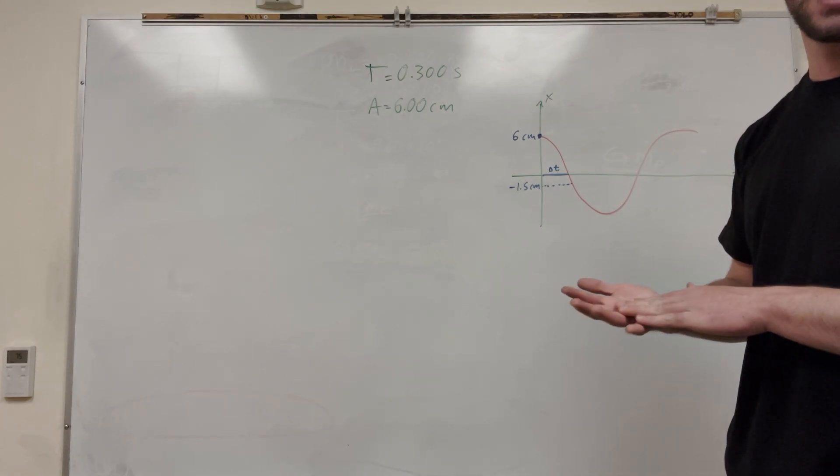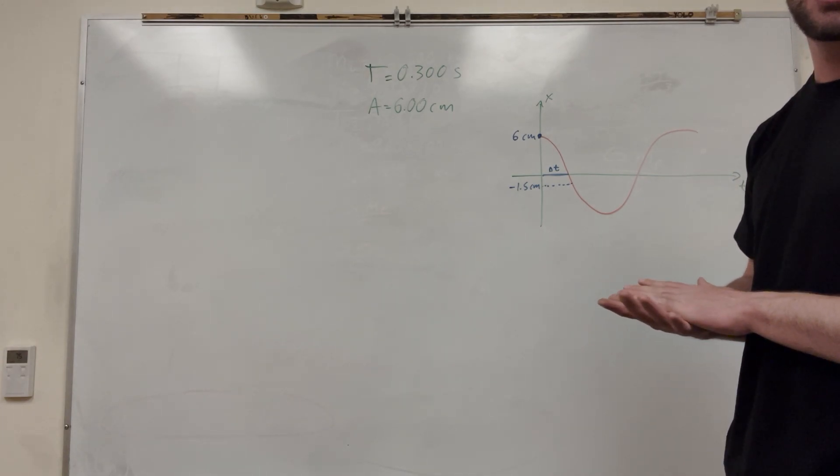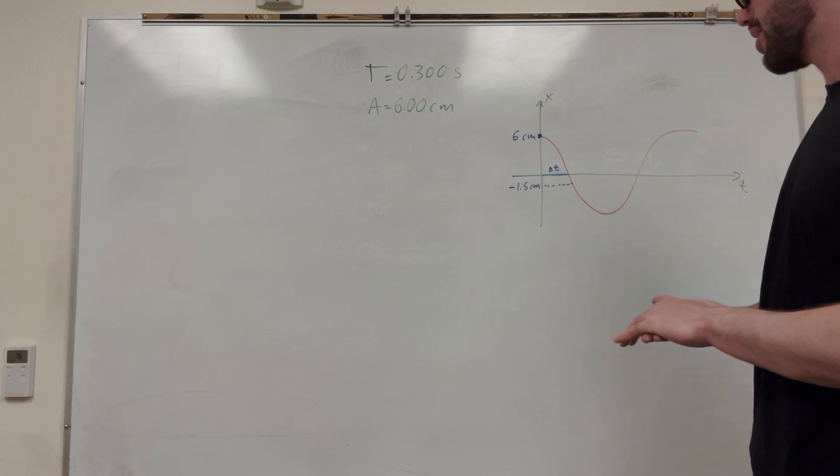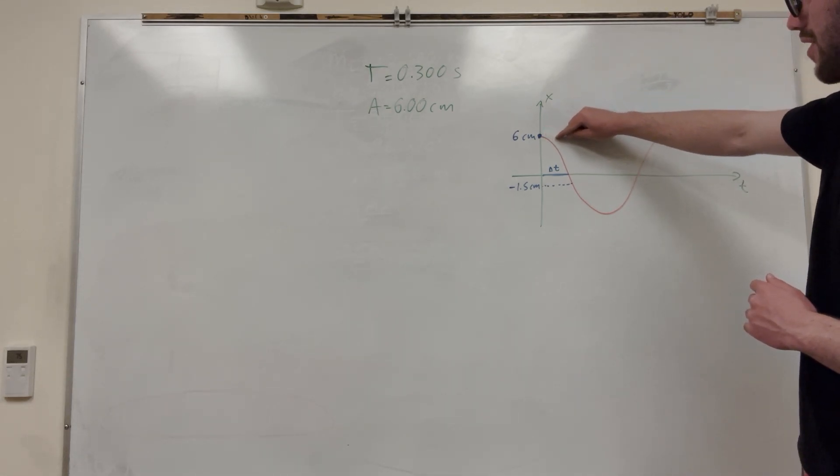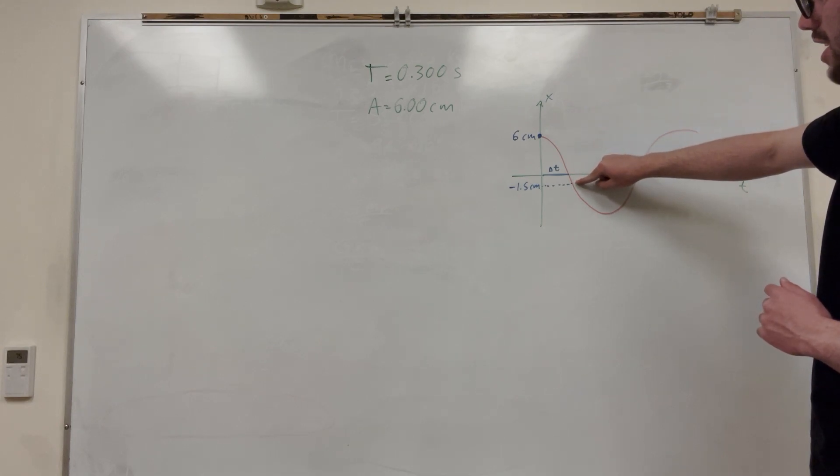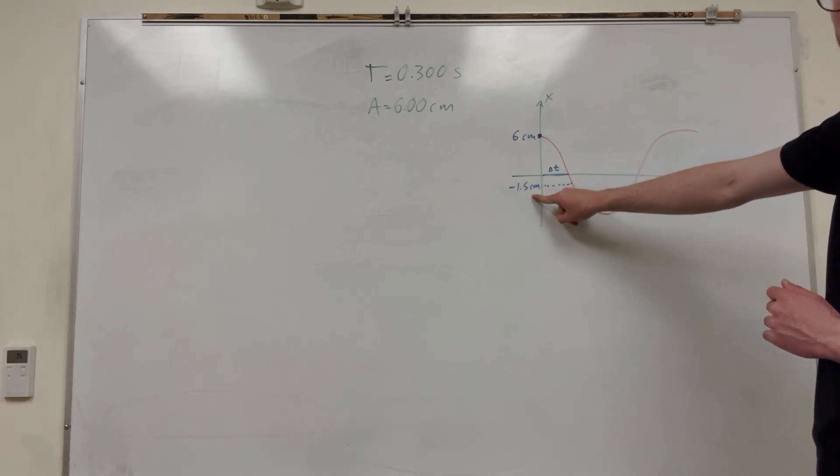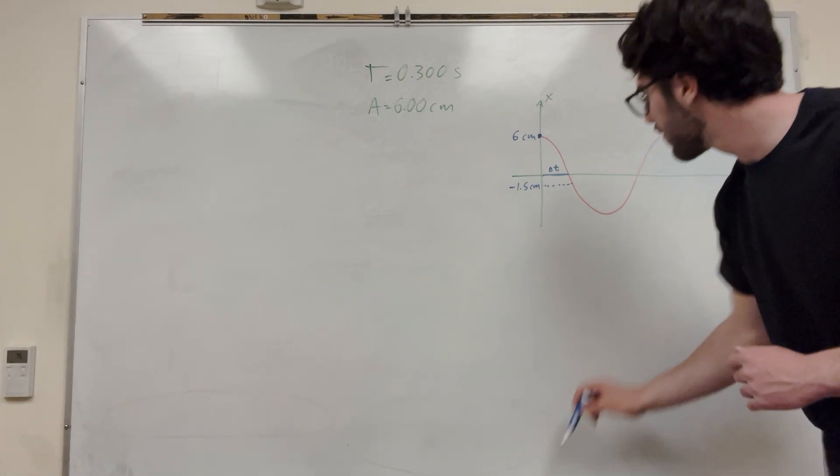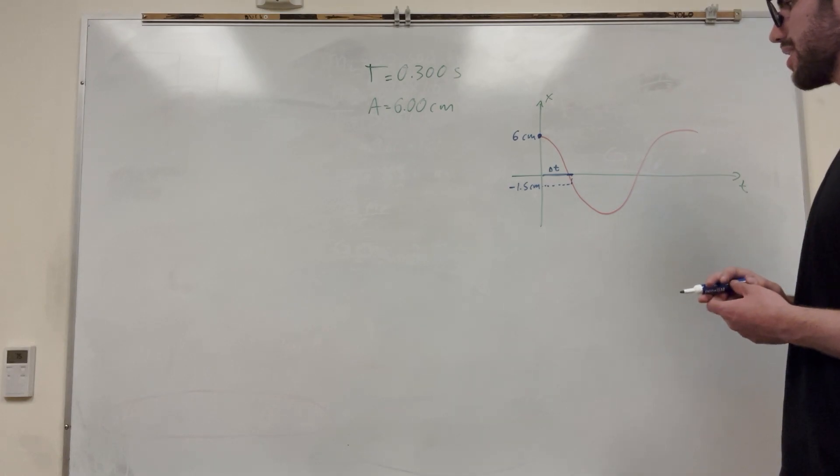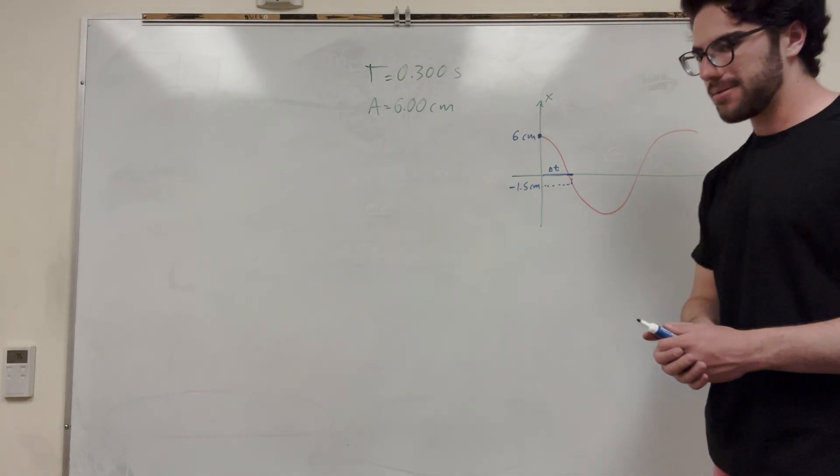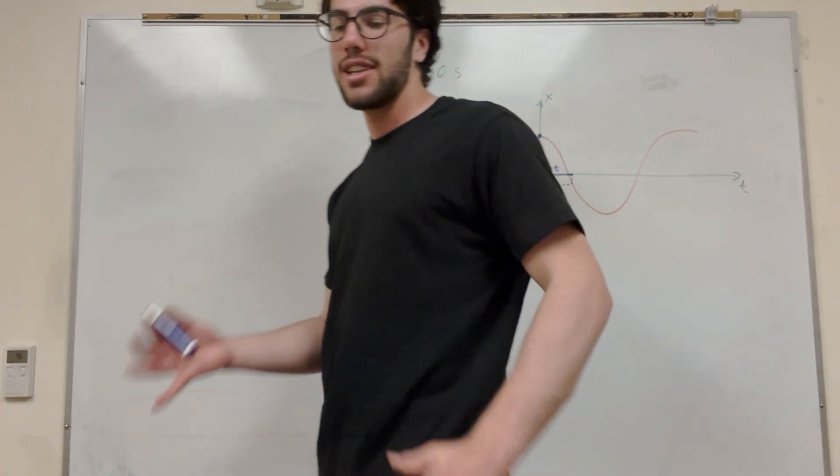So what that's saying basically is there's going to be no displacement at the starting point. So it wants us to find the time it takes the object to go from six centimeters to negative 1.5 centimeters. So as you see, it's going to kind of go in this cosine function down, and then its position is going to hit negative 1.5 centimeters. And our goal is to find how long it takes for it to hit that point. So what's that time going to be? How are we going to do this mathematically? Let's figure it out.